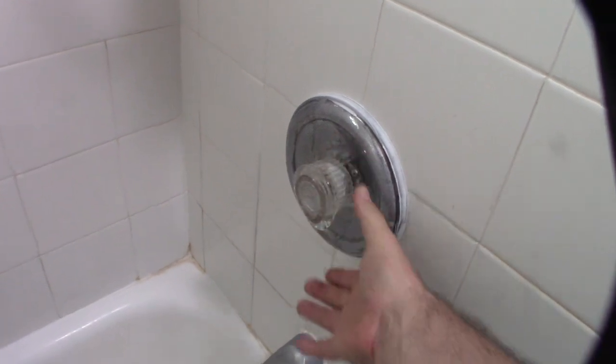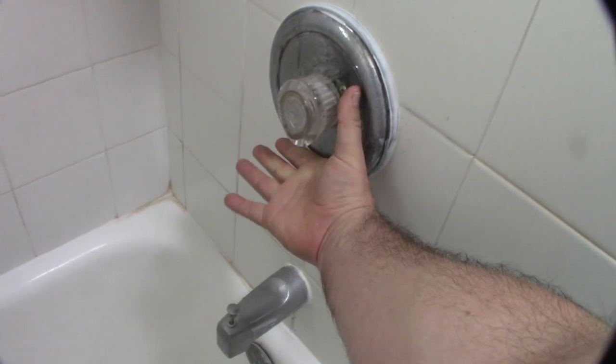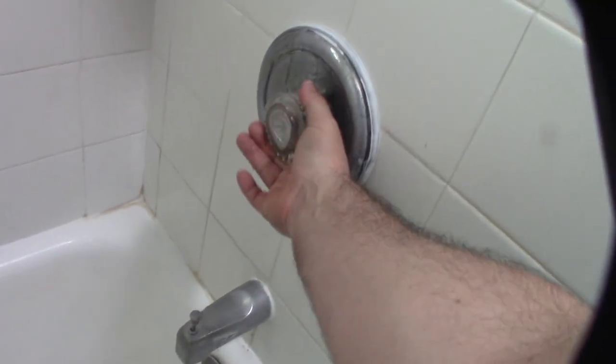Let's see if you mess with it. This is a Moen faucet, the shower faucet obviously. It's really intermittent. Sometimes it turns off, sometimes it doesn't.